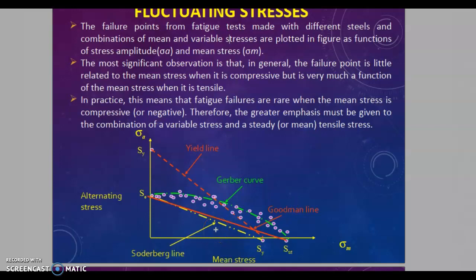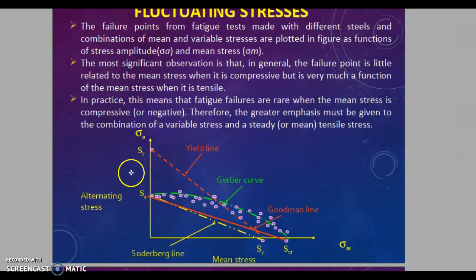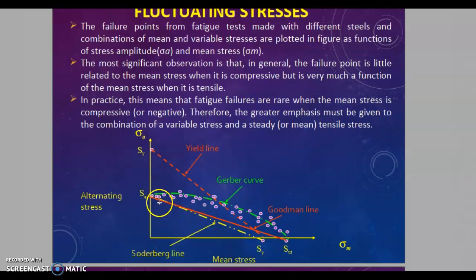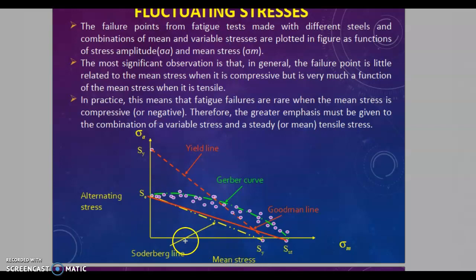The fourth theory is the Soderberg theory. According to this, one point is AC (endurance limit) on the alternating stress axis and the other point is SY on the mean stress axis. If the alternating stress is less than or equal to AC and the mean stress is less than or equal to SY, the point falls under this line and the specimen will be safe.